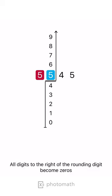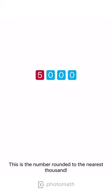All digits to the right of the rounding digit become zeros. This is the number rounded to the nearest thousand.